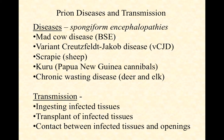Kuru was a prion disease seen only in Papua New Guinea among cannibalistic populations. They would kill enemies and eat parts of them ritualistically — including the brain — and if that person had Kuru, the person who ate it would come into contact with prion PRP and develop Kuru as well. Once they stopped that practice, Kuru became extremely rare, if it occurs at all anymore.